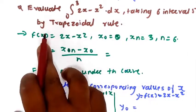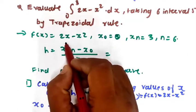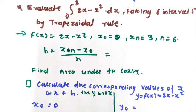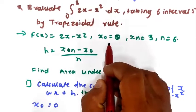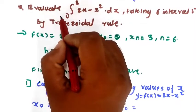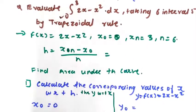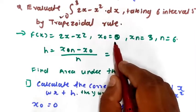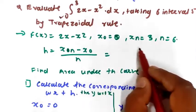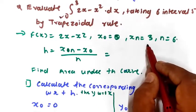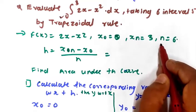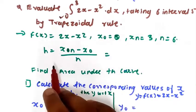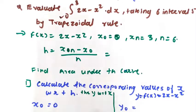The given conditions are: the function is 2x minus x squared, the interval is x0 = 0 to x = 3, so the initial value is 0 and the final value is 3. The number of iterations is given as 6, and we have to find the step size.